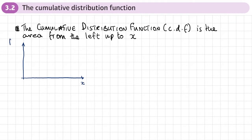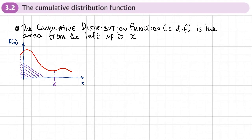So what does that look like on a graph? We've got an axis here, and some sort of function which gives the probability. Starting from one side and going all the way up to X, the area all the way up to X — whatever that value of X is — is defined by the Cumulative Distribution Function. Plugging in the value of X gives the area up to that point. To avoid confusing the CDF with the PDF, we use a capital F for the CDF.